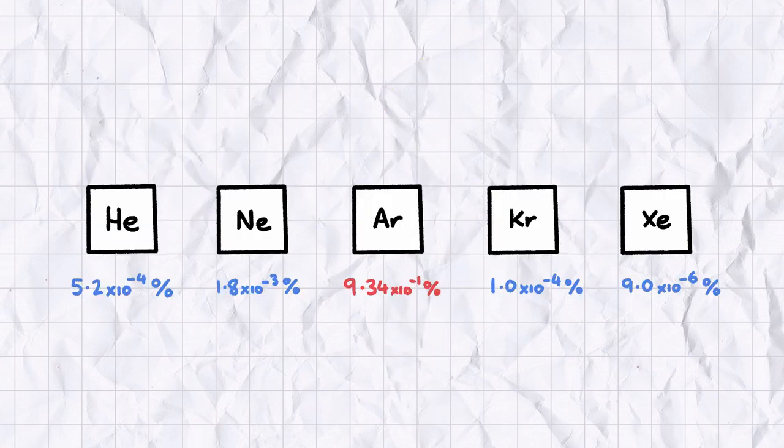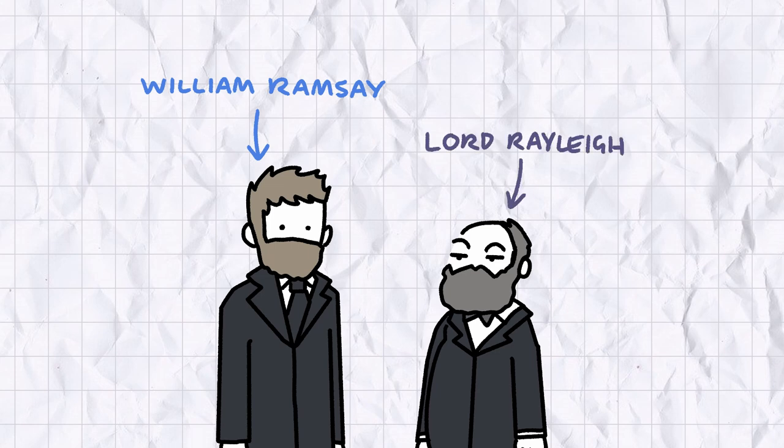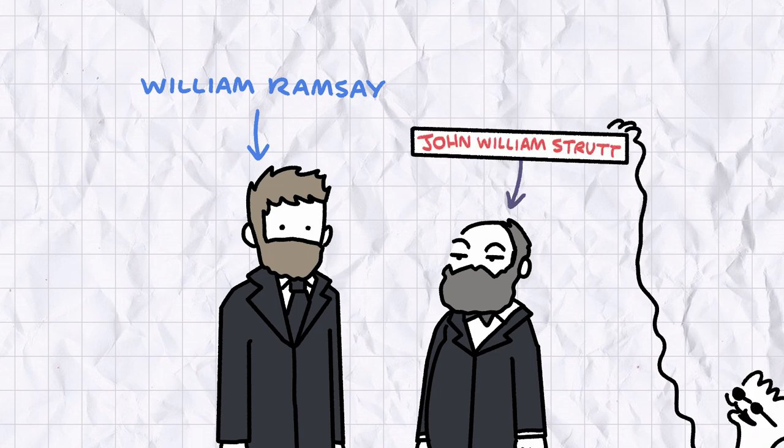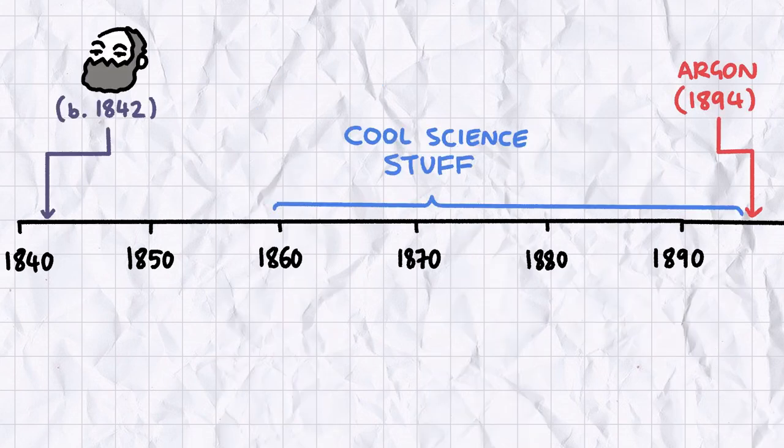As well as being the most common noble gas in air, argon was also the first of the bunch to be discovered. As with neon, krypton and xenon, William Ramsey contributed to the discovery, this time with his scientific partner Lord Rayleigh, or John William Strutt if you want to stick it to the aristocracy. At the time of Argon's discovery, Rayleigh was in his 50s and had already made a name for himself in scientific circles.